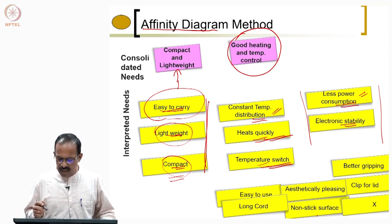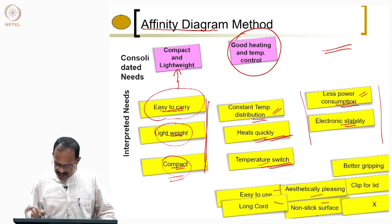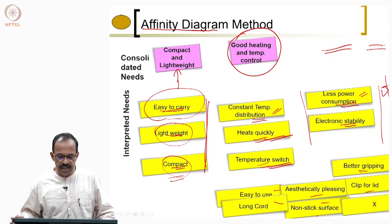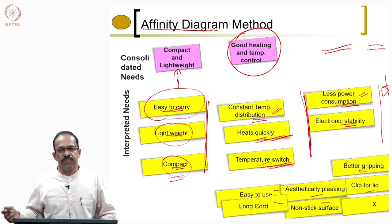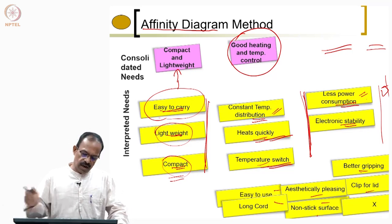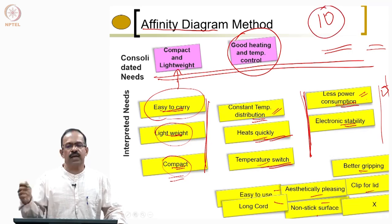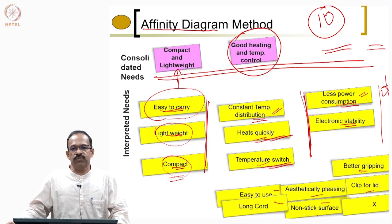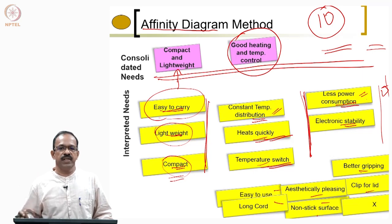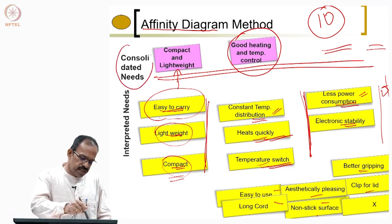Similarly, 'less power consumption' and 'electronic stability' also talk about a requirement of low power consumption. Like this, you will have a lot of further needs. All those needs can actually be categorized; you can make another group here and identify the actual needs that can be consolidated from the interpreted needs. This way, even if you have a large number of interpreted needs identified by the design team, you will be able to bring it down to a small number of actual needs of the customer — probably 10 or 15 actual needs.